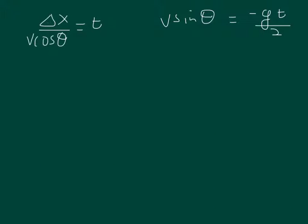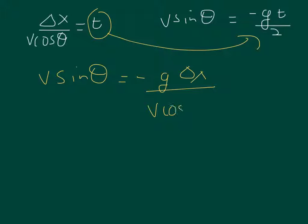Here are my two equations from the other page and I'm going to take t and sub it into this equation. I'm going to get v sine theta equals negative g delta x over v cosine theta 2. Then I'm going to rearrange this and make it 2 v squared sine theta cosine theta equals minus g delta x.